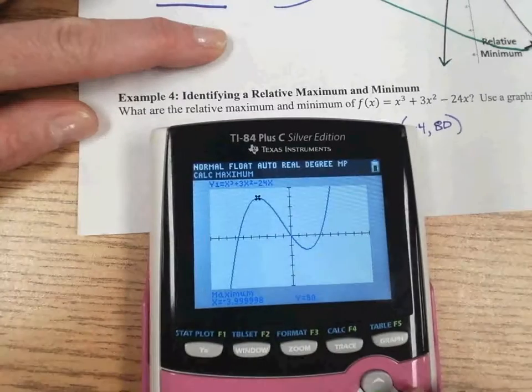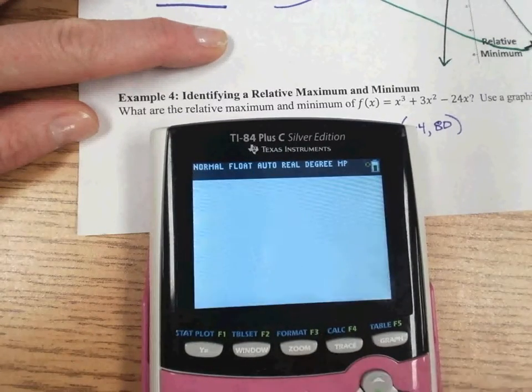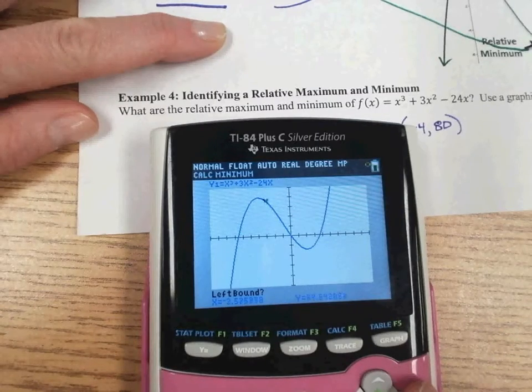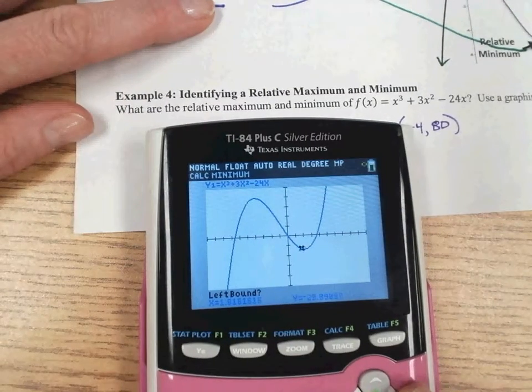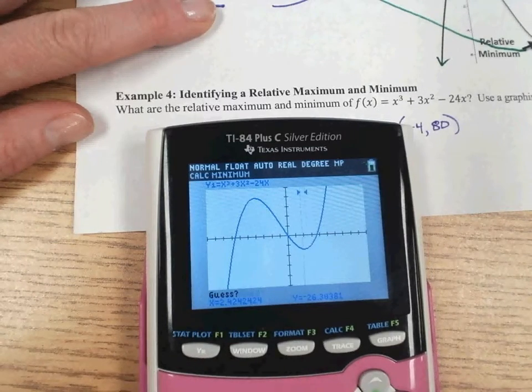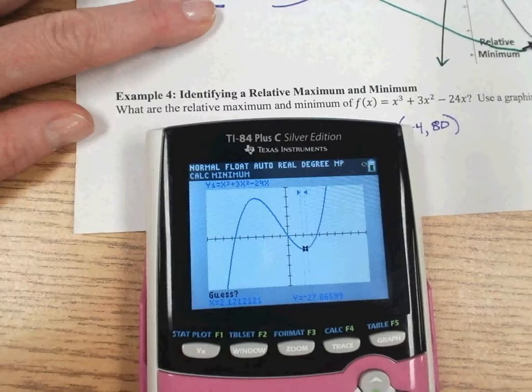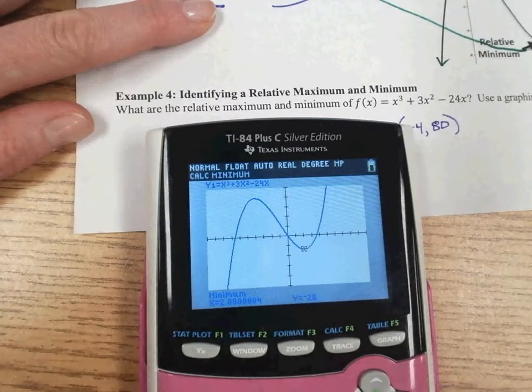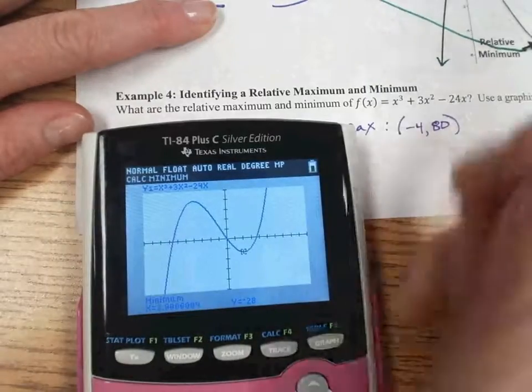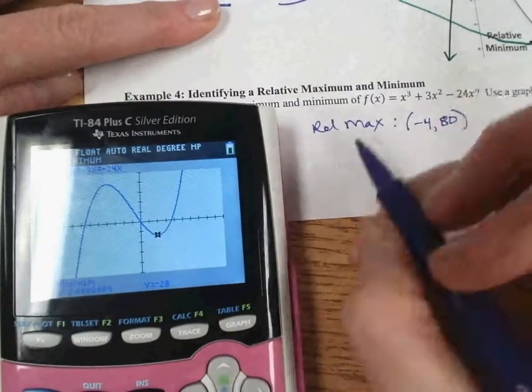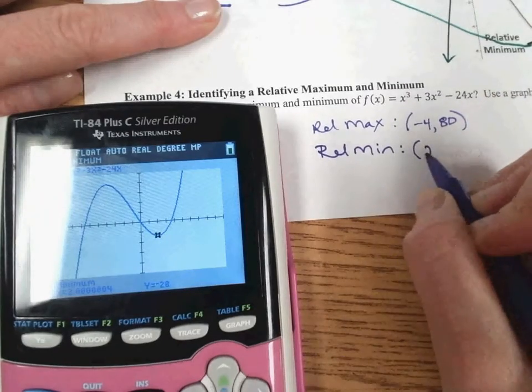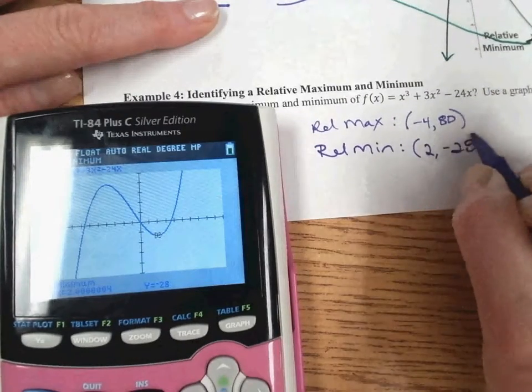And then we'll do, similarly, the second Calc key and go to our minimum. Scroll over to where you think you're just to the left. Again, this is left bound. Hit Enter. Go to the right. Hit Enter. And go in the middle. Hit Enter. And we'll get an estimate. It looks like it's really close to 2 and negative 28. So we're going to write our relative min is 2, negative 28.